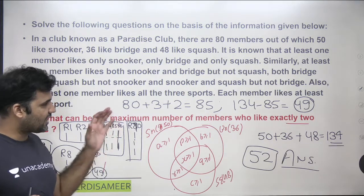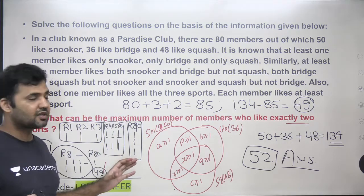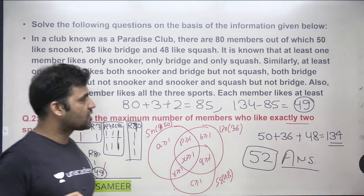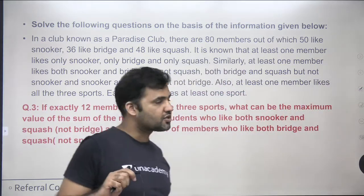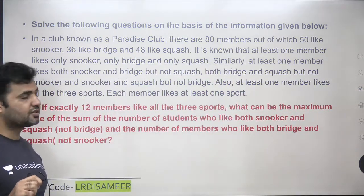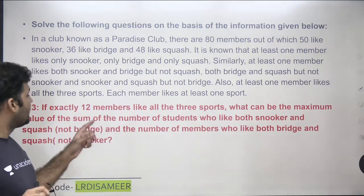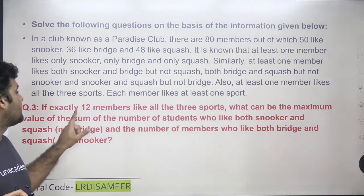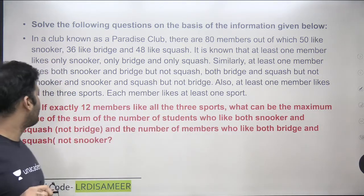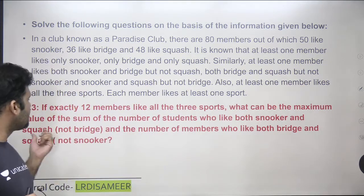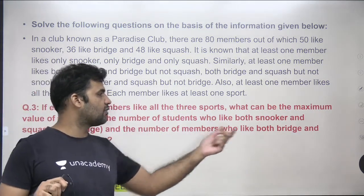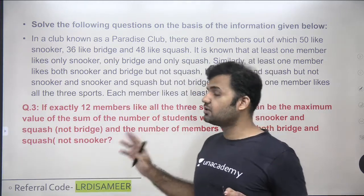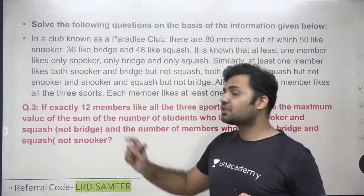This method of solving the question is simpler than any other method — you don't need to make equations and can straight away answer the question. There is one more question: question number 3, which I want you to try. The condition here is that exactly 12 members like all three sports, and the question asks for the maximum value of the sum of members who like both snooker and squash (not bridge) and both bridge and squash (not snooker). Try it with this method — we've now discussed two questions on the same concept.